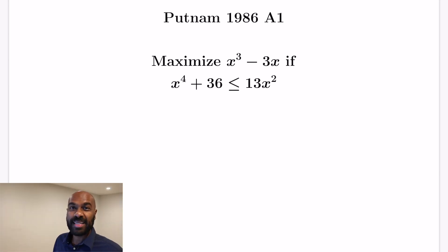Today we're going to look at a problem on the 1986 Putnam exam, number A1, the first problem on the exam. The problem asks to maximize x³ - 3x if you're given the constraint that x⁴ + 36 ≤ 13x².